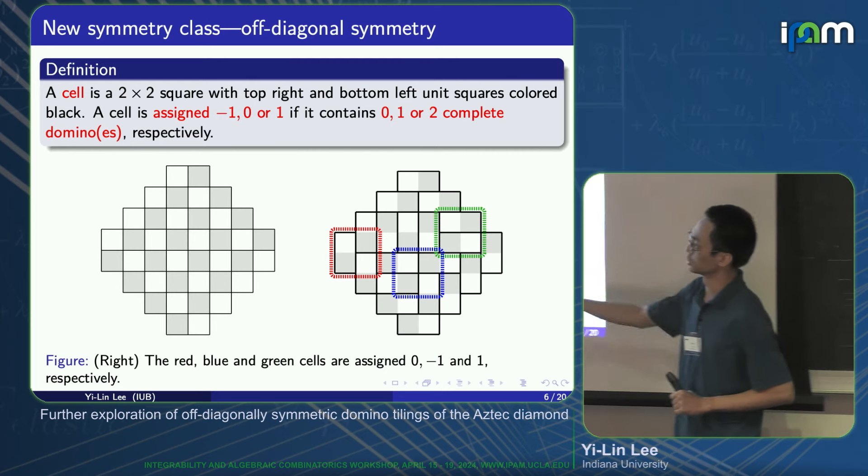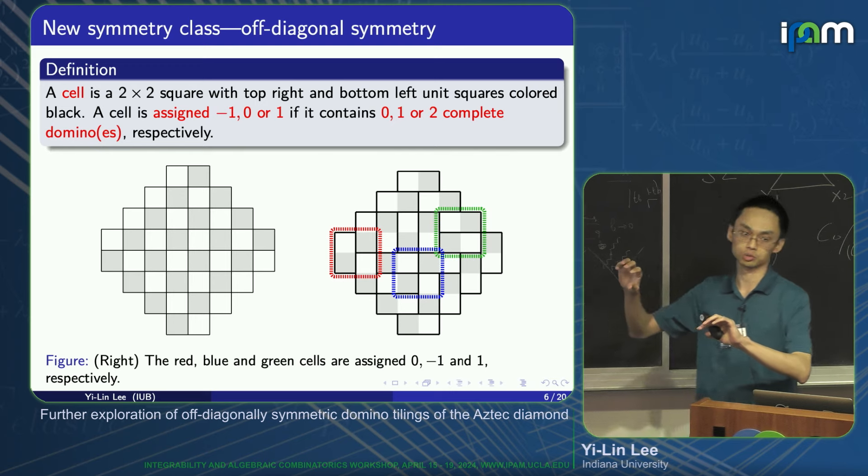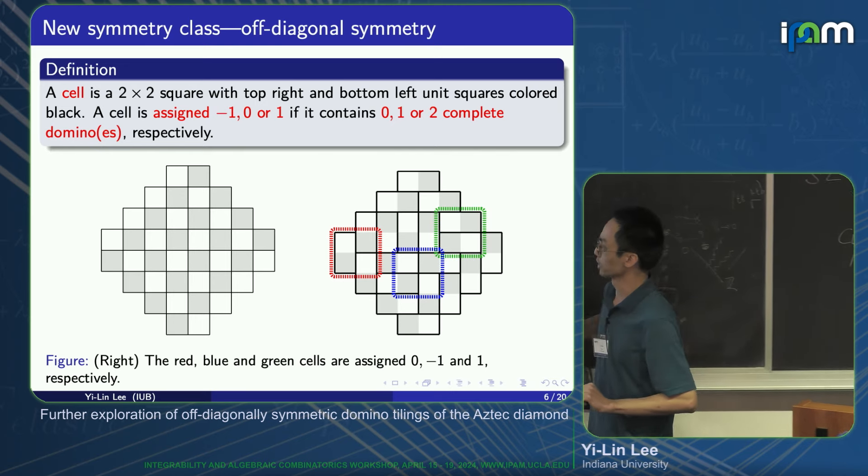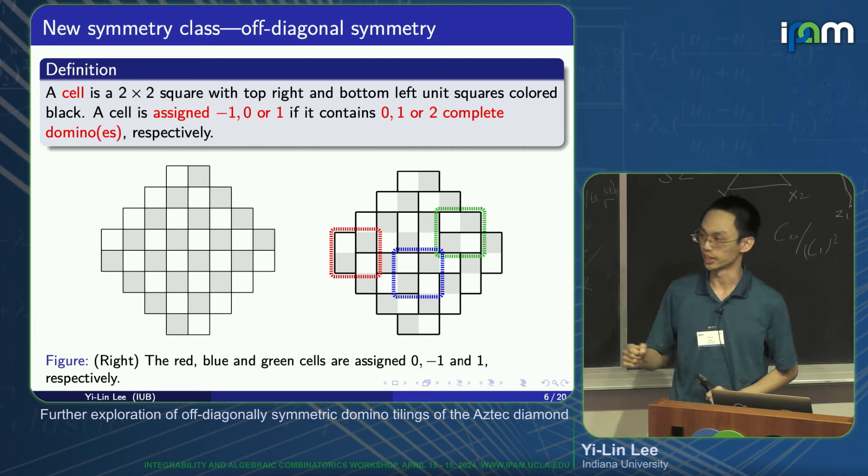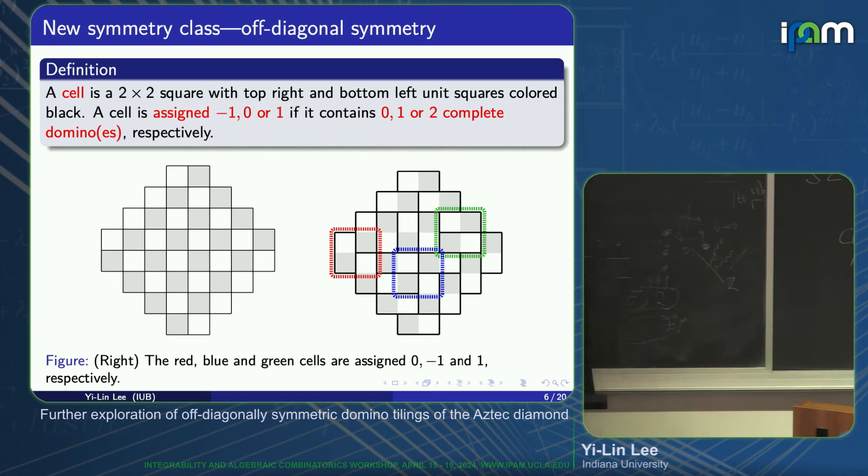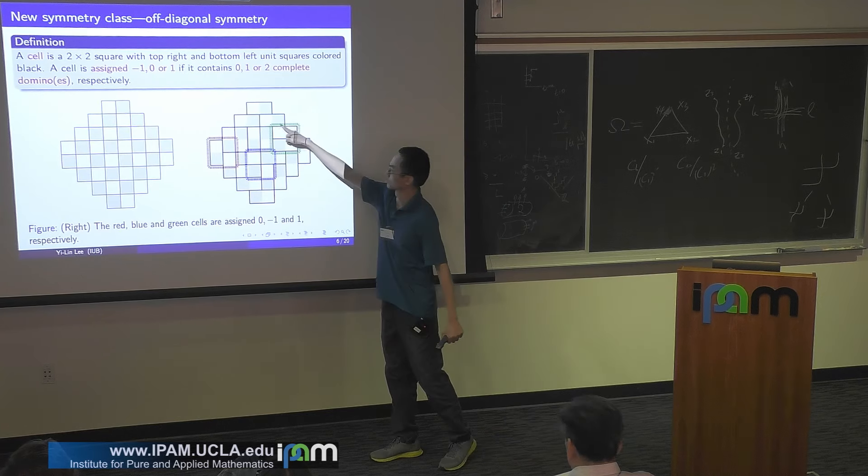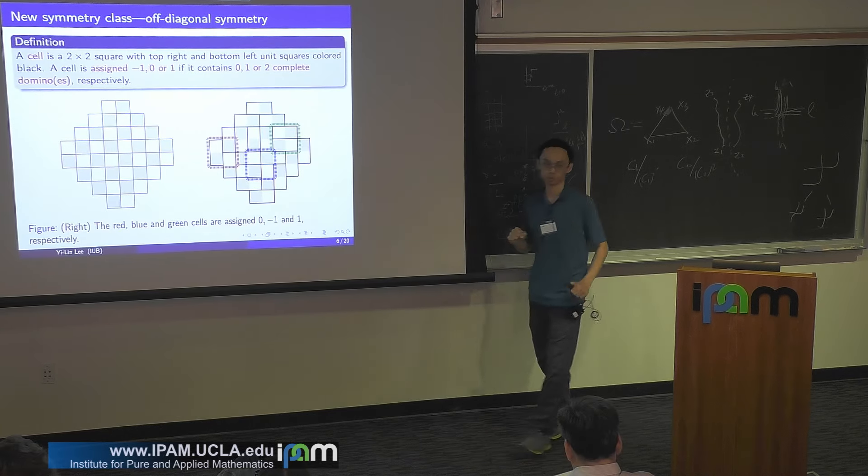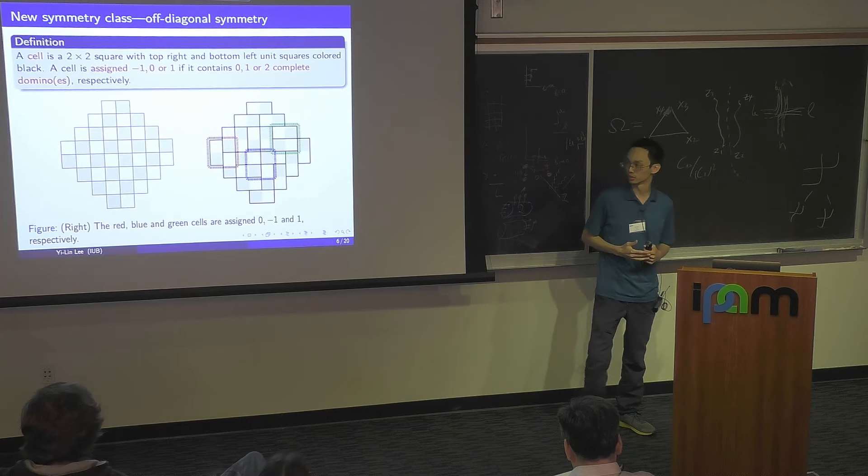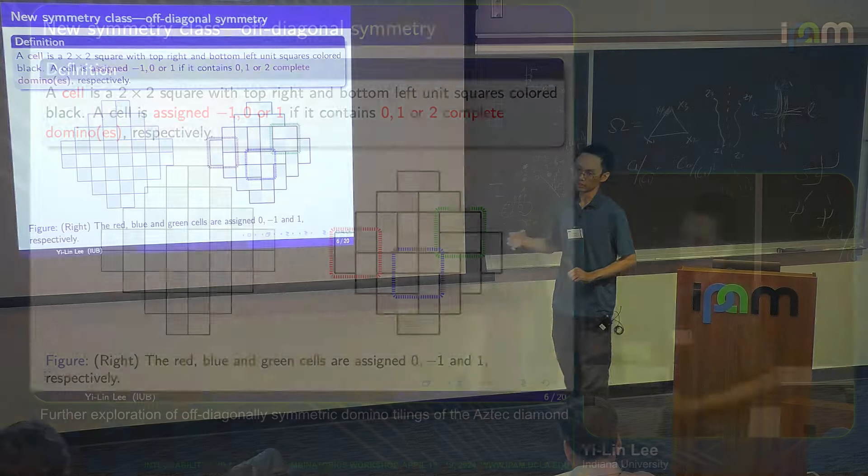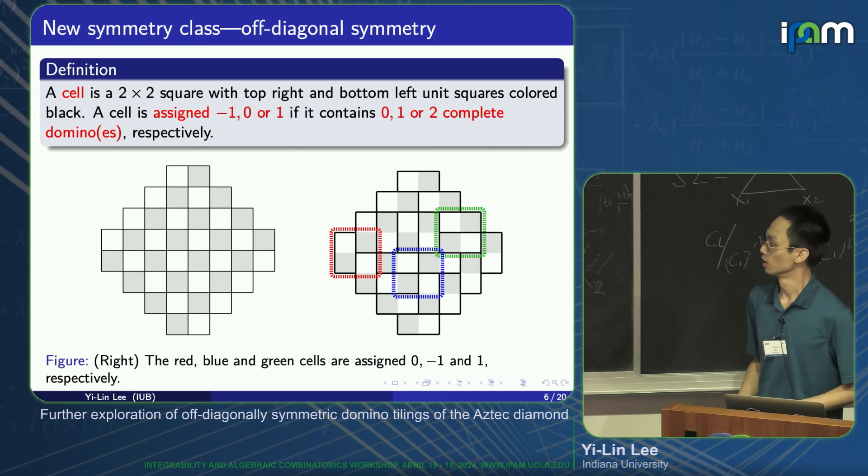Let me tell you how to define a new symmetry class. I think this is the most important definition in this talk. Let's consider the Aztec diamond region with the checkerboard coloring on it. A cell is a 2 by 2 square with top right and bottom left unit squares colored black. Now, given a domino tiling on it, we say a cell is assigned negative one, zero, or one if it contains zero, one, or two complete dominoes. For example, if you look at this red one, it contains only one complete domino, so it will be assigned zero. If you look at this green one, it contains two complete dominoes, so it will be assigned positive one. This blue one contains no complete domino, so it will be assigned negative one. Basically, given the domino tiling on it, you can assign one of these three numbers to each cell.